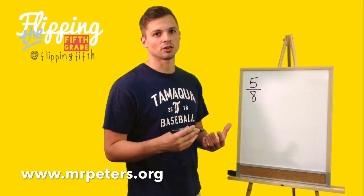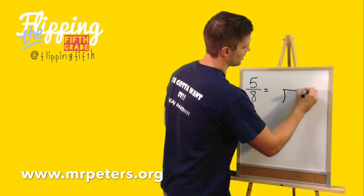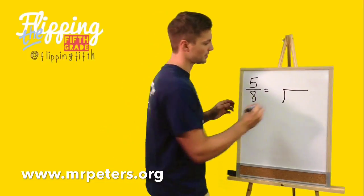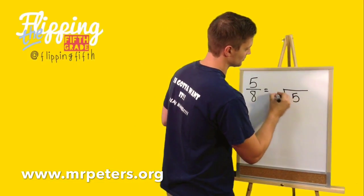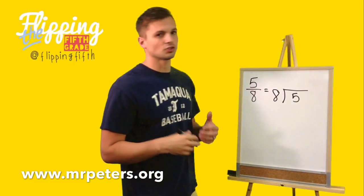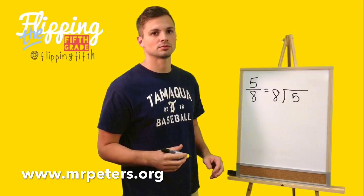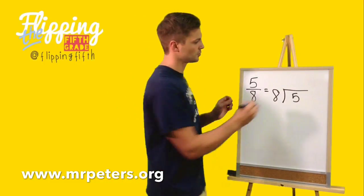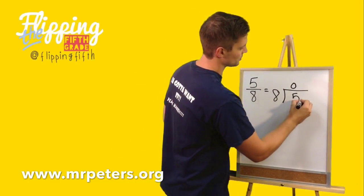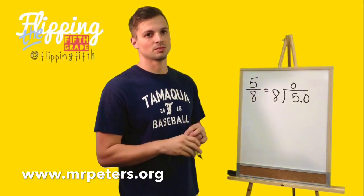We're going to set this up like a long division problem. We'll put our brackets. The key here is your numerator goes on the inside and your denominator goes on the outside. So we ask ourselves: how many times does 8 go into 5? We know that answer is nothing, so we're going to put a 0 here. What we're going to do next is put a decimal after and a 0, because 5.0 is the same as 5.